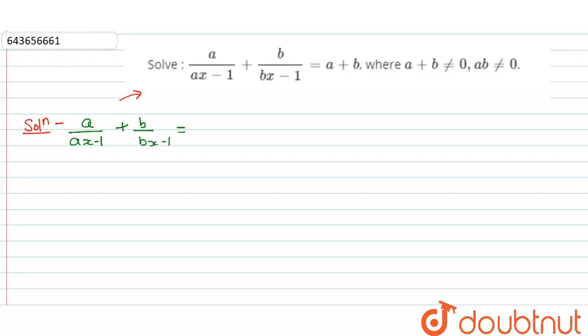ax minus 1 is equals to a plus b. Let's rearrange this term ax minus 1.